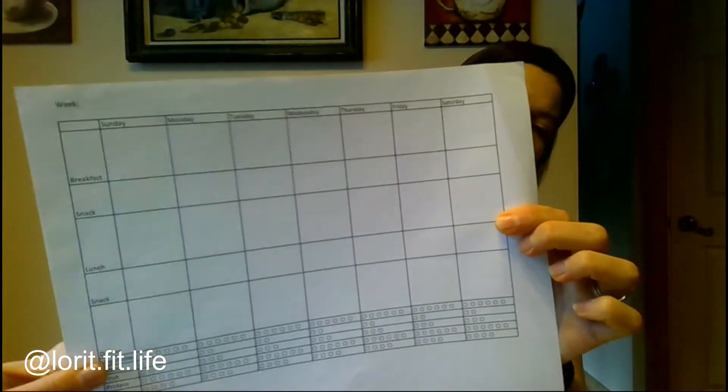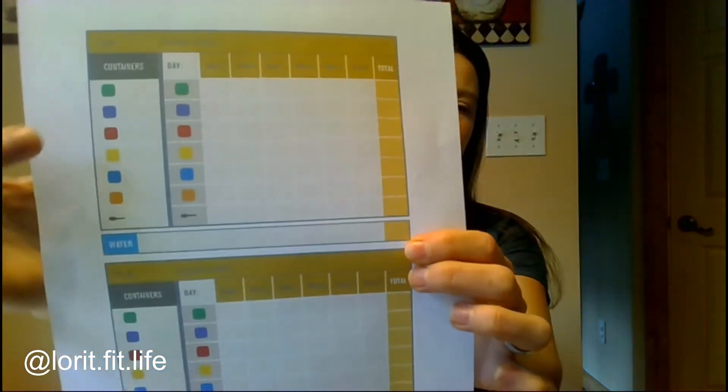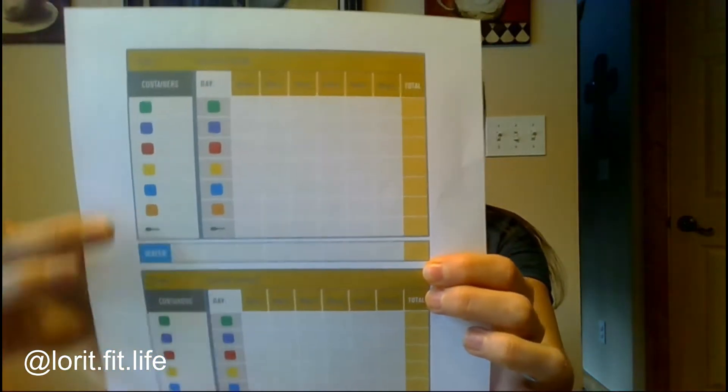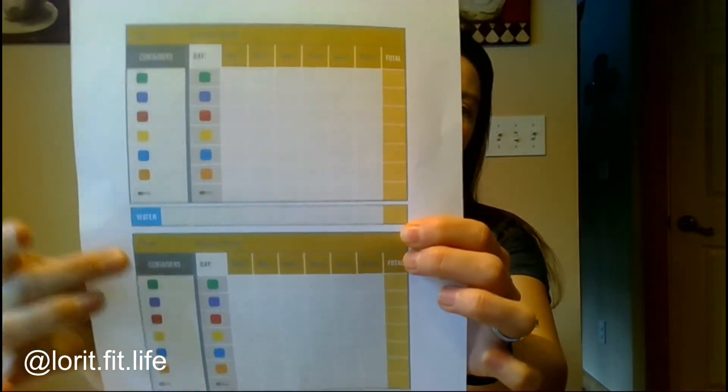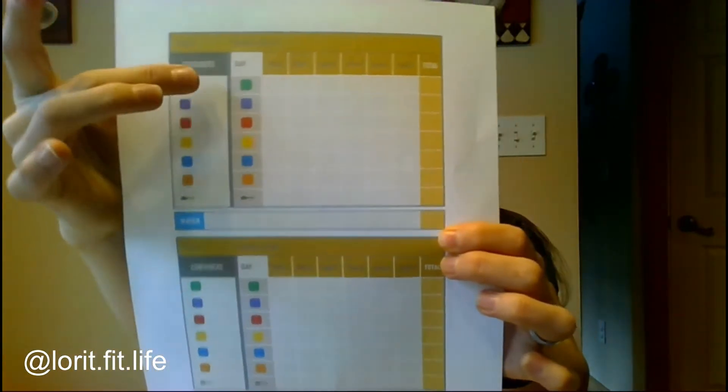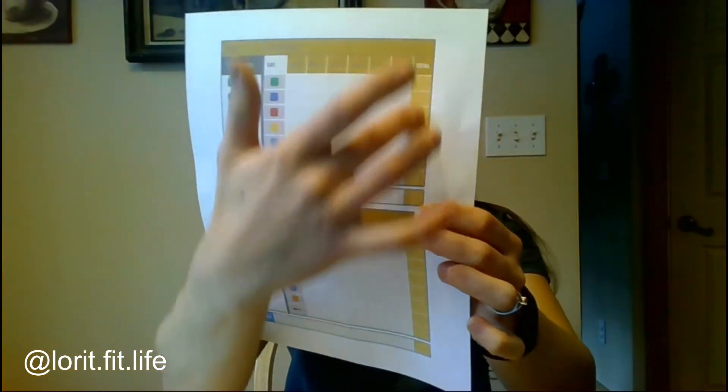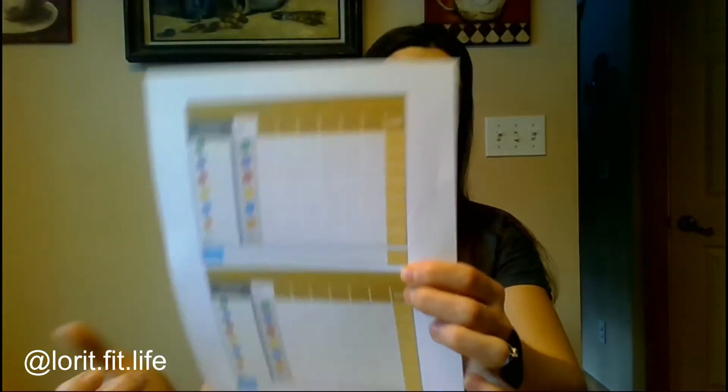The first thing we're going to talk about is two meal prep tools I'm going to give you. You'll get a weekly chart so you can plan out every day during the week — your breakfast, lunch, dinner, snacks — and then tally marks at the bottom to check off which food groups you've eaten or planned for. You also have the tally sheet showing two different days, going through every single meal, what food groups you'll be eating, and the total containers used during the day.